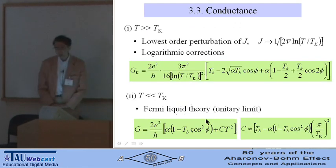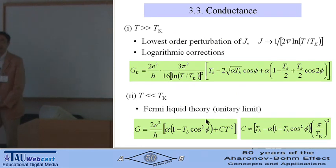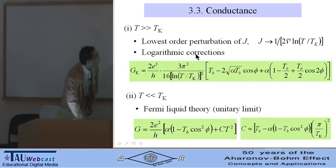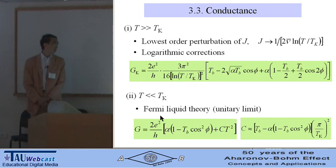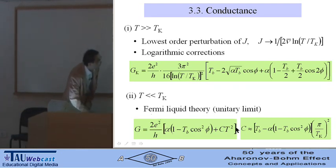Conductance can be calculated in the conventional way. At high temperatures, we obtain logarithmic corrections, and at low temperatures, Fermi liquid theory yields the unitary limit and its corrections.